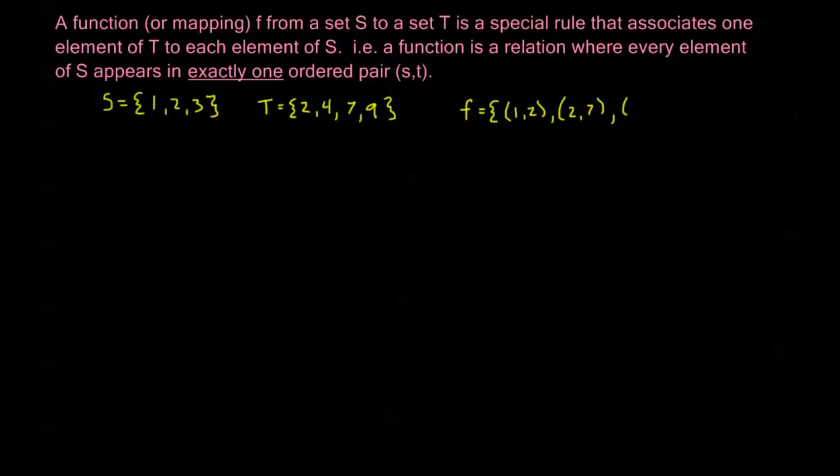well, it's clear that f is a relation from S to T. But for f to be a function, our only requirement is that every element of S appears in exactly one ordered pair. So no more than 1, no less than 1. And here we see that's exactly what we have.